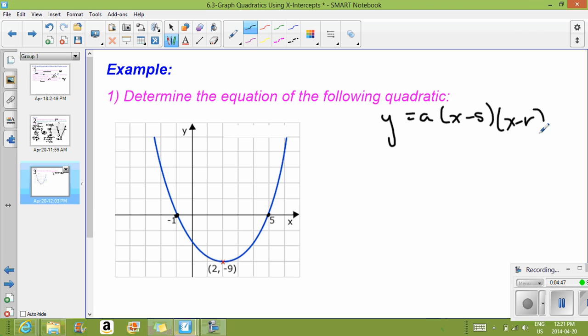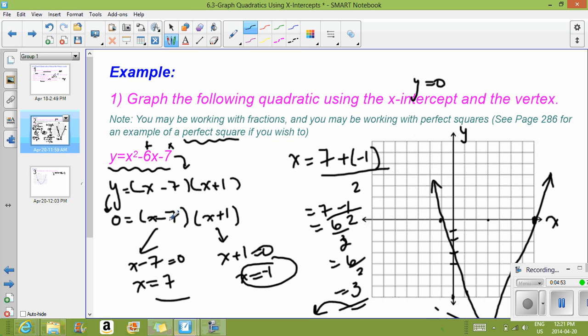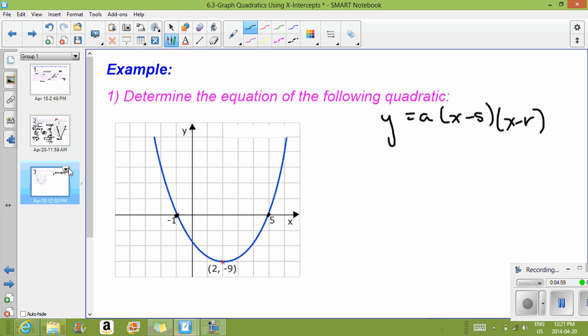It is in this form, so we can take those x-intercepts and we can put them in. And remember, even looking back to this one, inside the bracket we had negative 7 and positive 1, but when we solve for them it's the opposite signs. So if we have negative 1 and positive 5, when we put that into our bracket we end up with x plus 1 and x minus 5. So remember, it's the opposites.